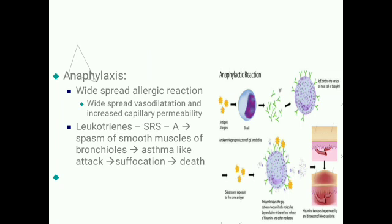In anaphylaxis, when the antigen is injected it can directly react with basophils of the blood and mast cells, producing a widespread allergic reaction including widespread vasodilatation and increased permeability of capillaries. This causes loss of plasma from the circulation, resulting in circulatory shock that can lead to death. Release of leukotrienes such as slow reacting substance of anaphylaxis causes spasm of smooth muscles of bronchioles, producing an asthma-like attack that may also lead to death by suffocation.